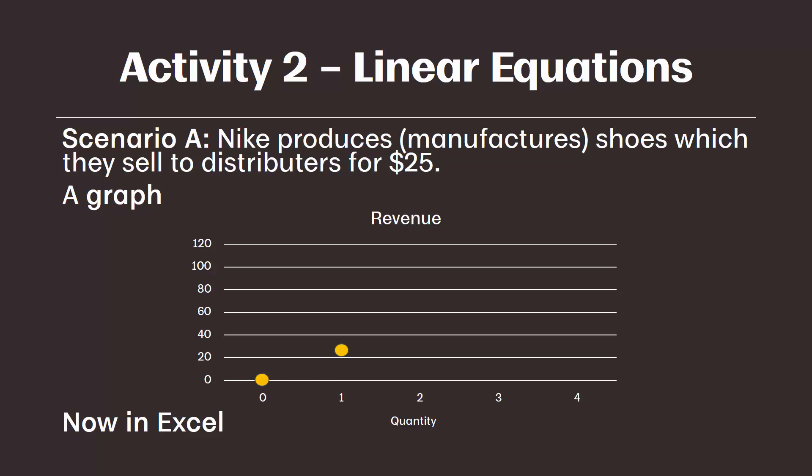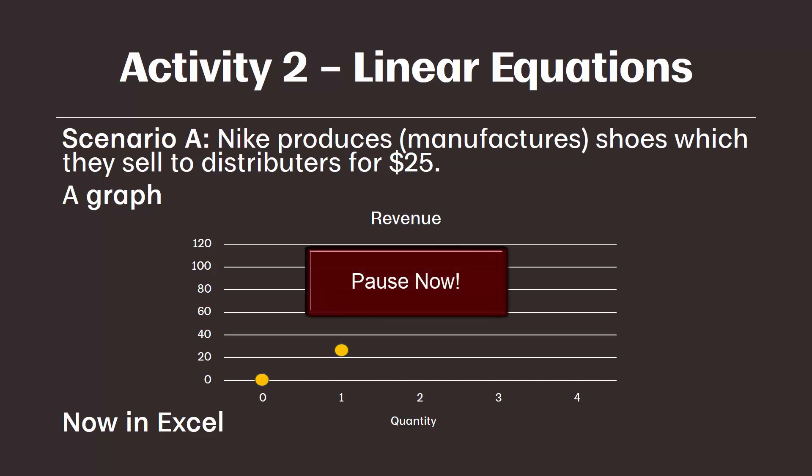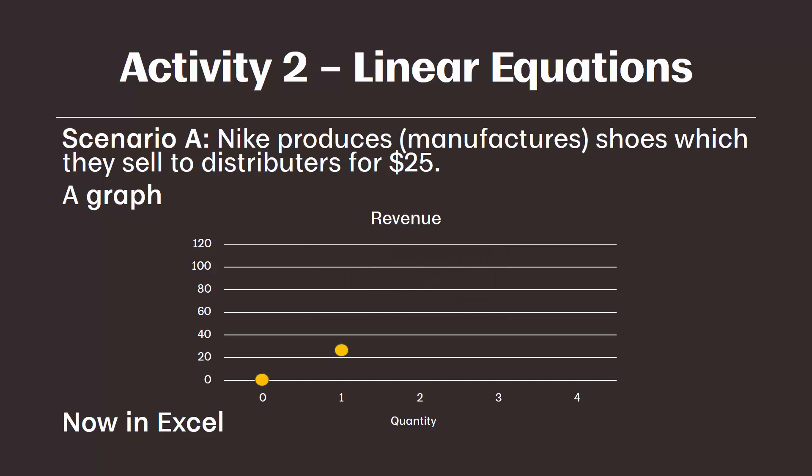Go ahead and pause the video and make sure you can plot the next three points on the graph in your note packet. You'll need to draw out the y-axis with revenue and the x-axis with quantity to get a feel for what you're graphing. Welcome back — you should have plotted points at the intersection of 2 and 50, 3 and 75, and finally 4 and 100.